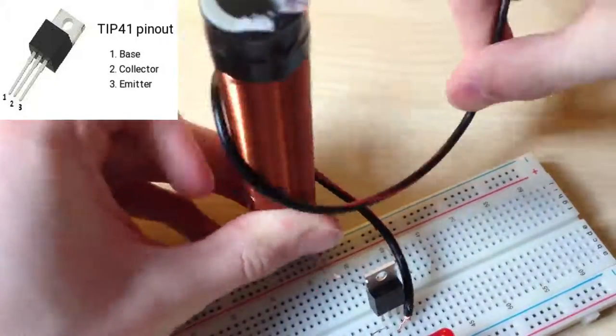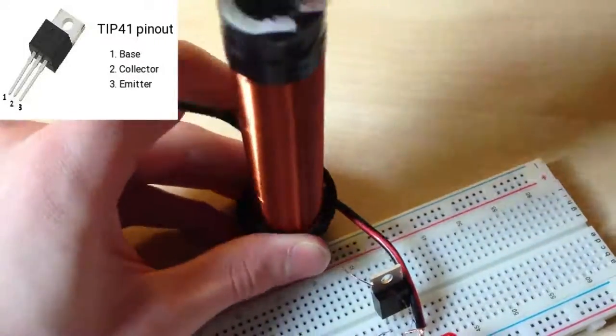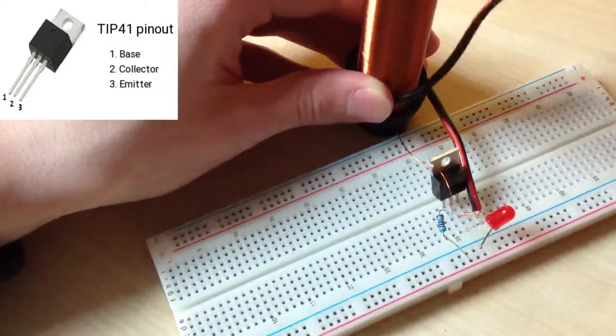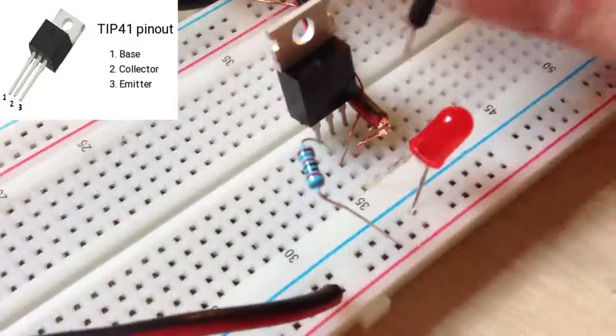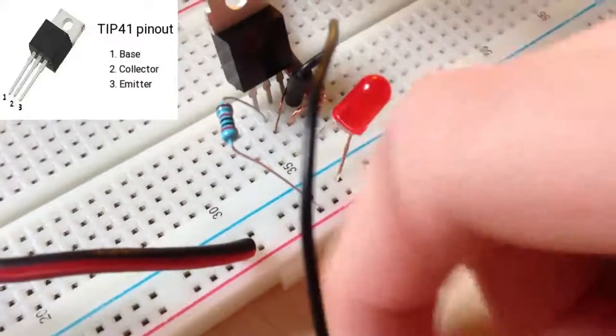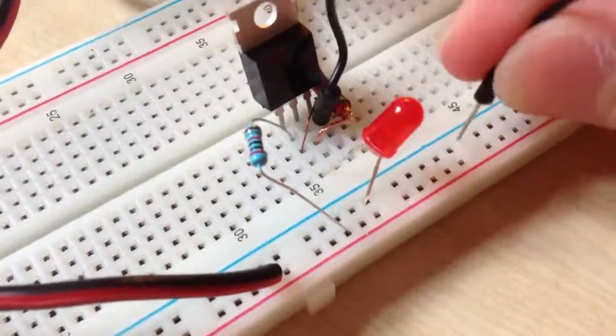Then make secondary coil, three turns around our primary coil. And finally connect end to positive rail, and also connect emitter of transistor to ground rail. Our circuit is now complete.